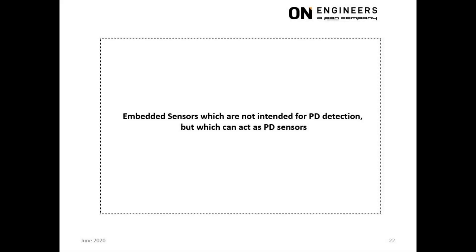In subsequent slides, I will describe the use of embedded sensors which are not intended for PD detection but can act as PD sensors. The embedded nature of these sensors within the electrical assets places them very close to any PD defect, making them suitable PD sensors.